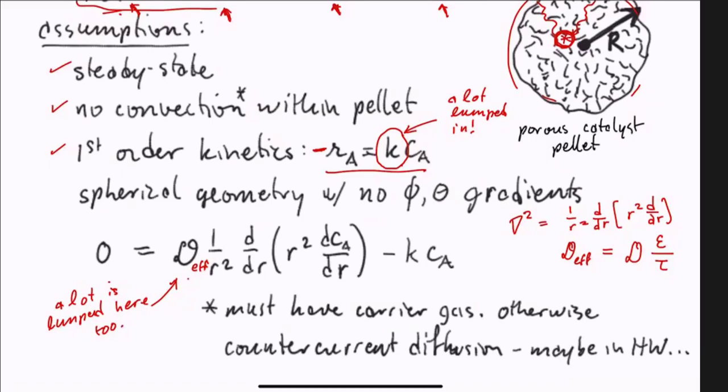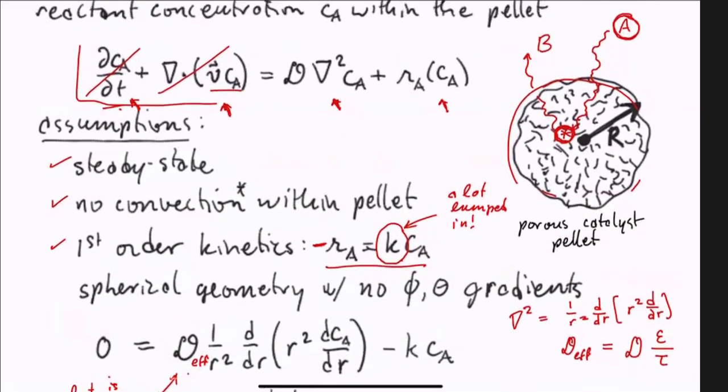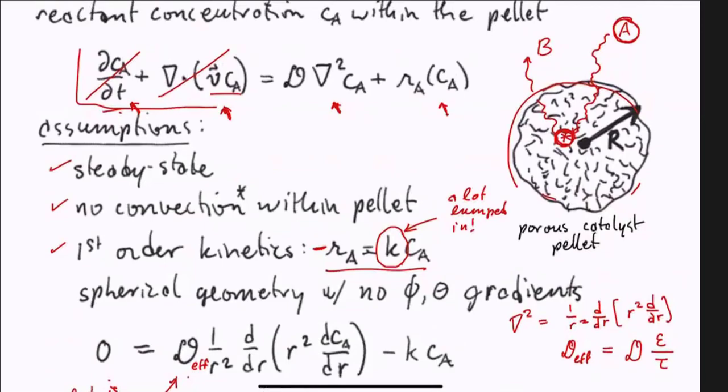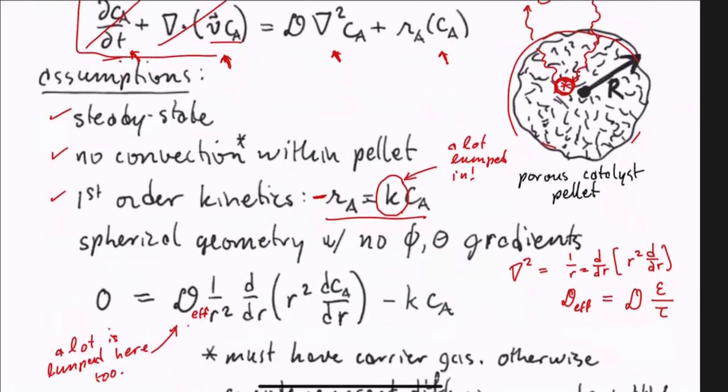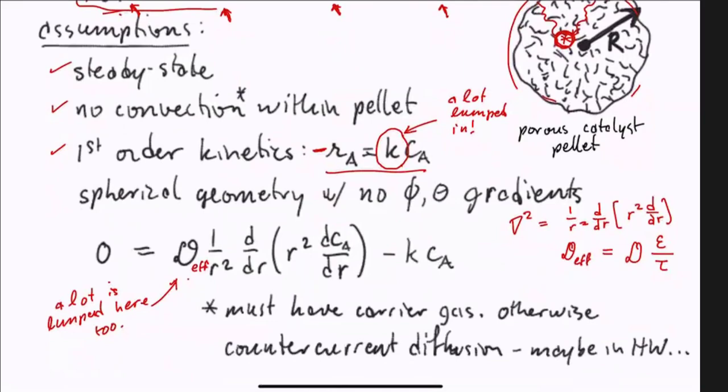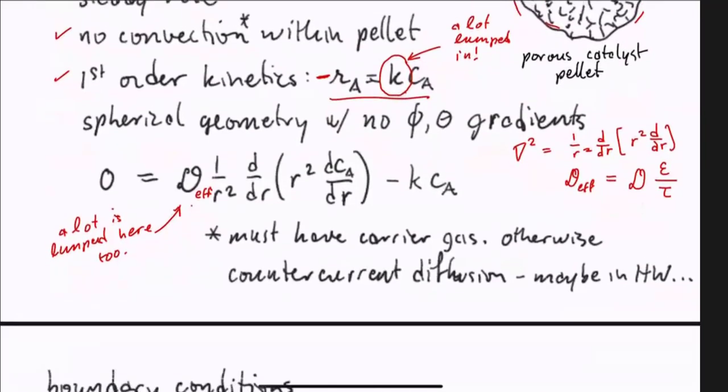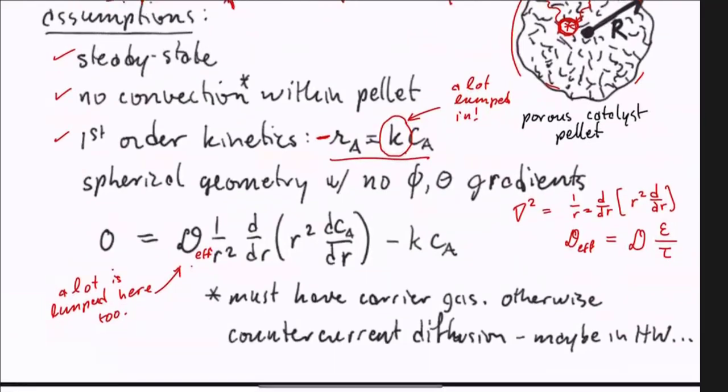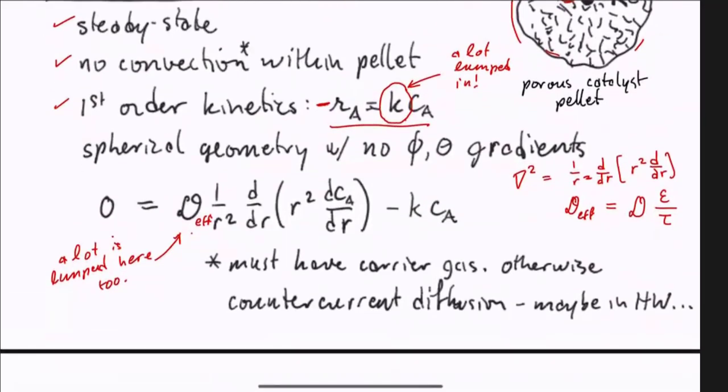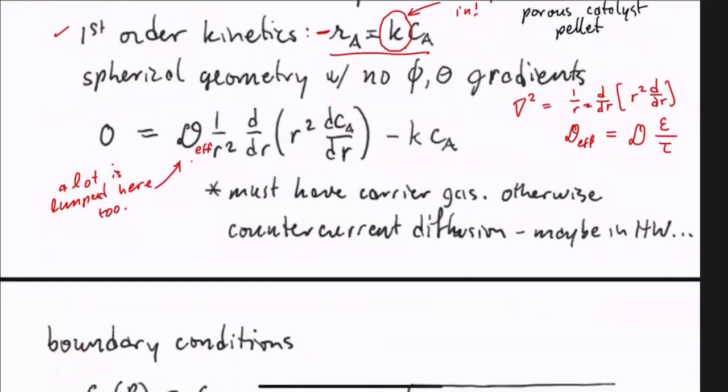A couple caveats here. We have to have either a carrier gas or countercurrent diffusion. I've described this situation as though we're consuming molecule A, it converts to a single molecule B and diffuses back out. In this case, countercurrent diffusion down inside that pore network is a really good assumption. The other circumstance where it can be okay is if you have a large amount of some inert carrier gas. I want you to learn the qualitative nature of these effects and not worry about an absolutely detailed calculation.